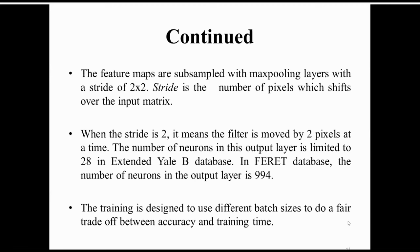With a stride of 2, the filter moves by two pixels at a time. The number of neurons in the output layer is limited to 28 for the Extended Yale database, which has only 28 subjects. For the FERET database, the number of neurons at the output layer is 994, corresponding to the number of classes.